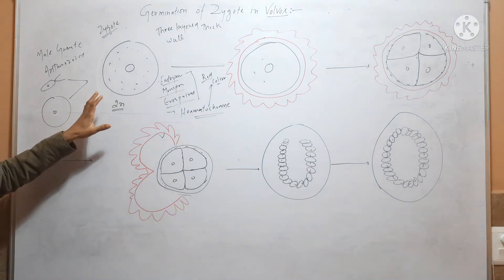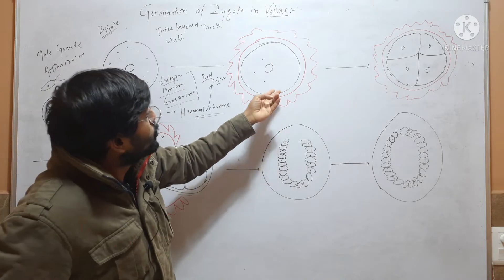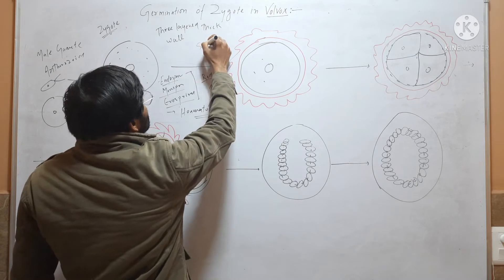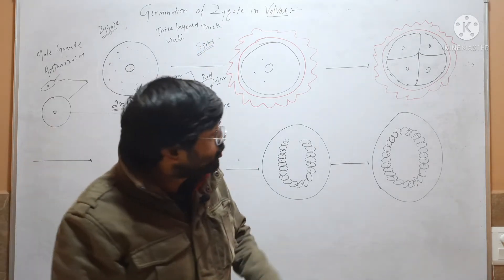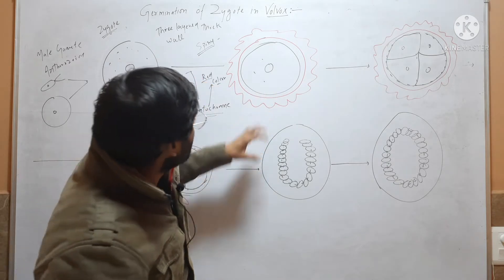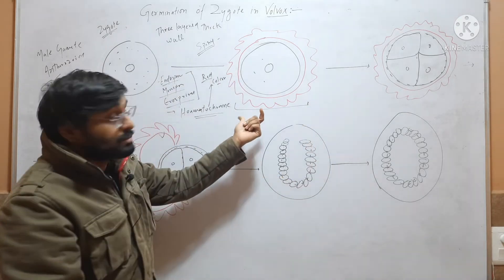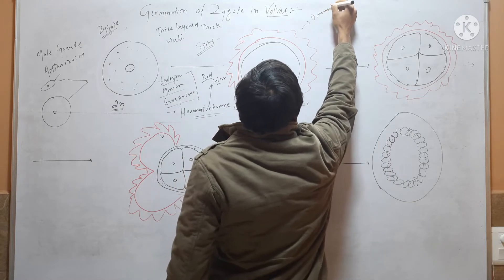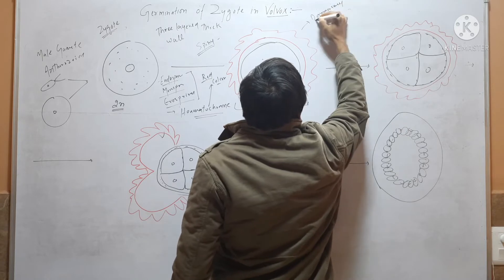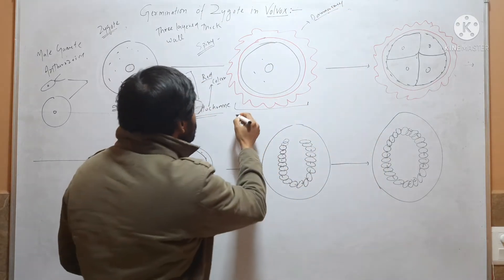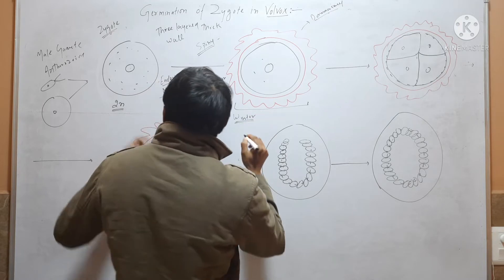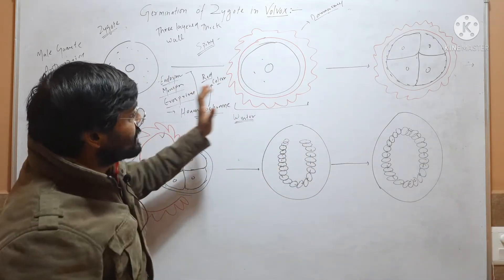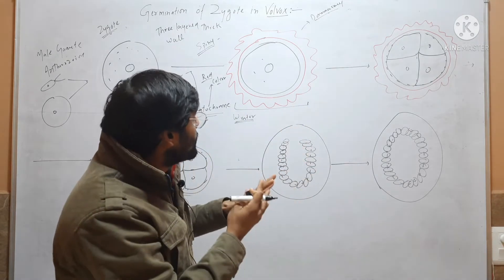Out of the 3 layers, 2 inner layers are smooth and the outer layer is spiny — that is, Exosporium is spiny. After secretion of these layers, the zygote undergoes dormancy and remains dormant in winter season. Zygote formation occurs towards the end of spring season, so it will secrete 3 layers and remain dormant through winter.